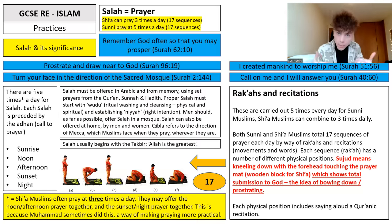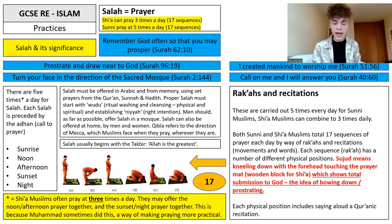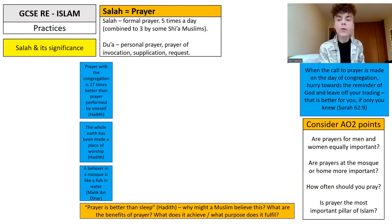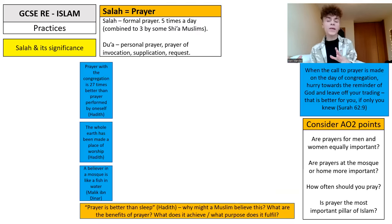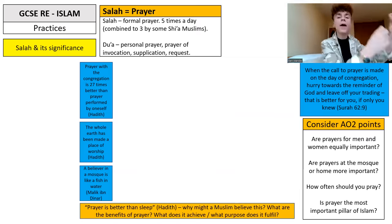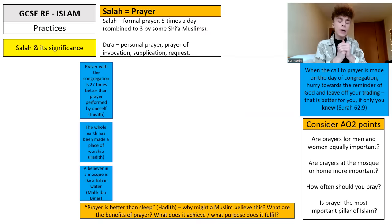The beliefs about God being omnipotent are shown when you pray because you are bowing down to him, physically showing total submission to God's will — linking to those ideas of predestination from beliefs and teachings. Before God, you are humbled, in full submission to him. We have 17 sequences a day — the rakas performed along with the Quranic recitation. Surah 62 says: 'when the call to prayer is made on the day of congregation, hurry towards the reminder of God and leave off your trading — that is better for you if only you knew.' This speaks to Friday prayers, the expectation that you will leave your work and go pray, because prayer takes priority.